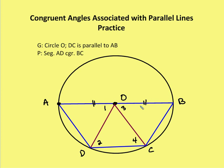I know that AO is going to be congruent to OB. I also know that because all radii are congruent, OD is going to be congruent to OC, which is going to be congruent to OB and also OA. So now I have four segments that are congruent.